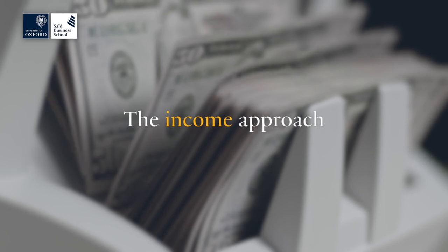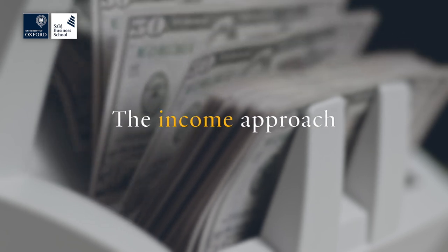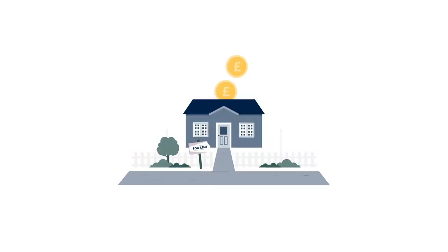The income approach is a way of building a discounted cash flow model for the most likely cash flow that an investment property will throw off. So if we're buying a residential property in order to receive a rental flow from it, what will that rental flow be? How can we discount that rental flow, and what will the resulting present value of that cash flow be?